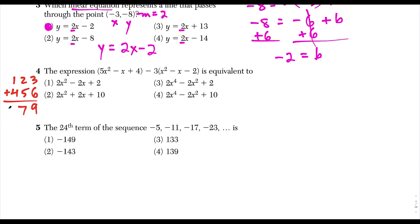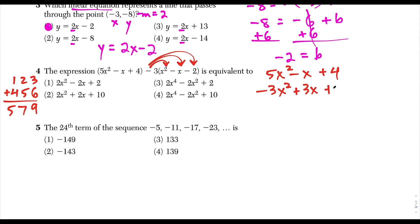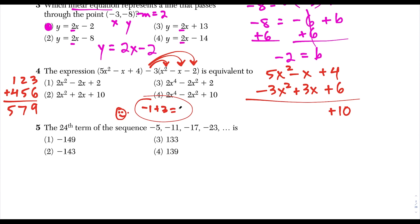Distributing negative 3: negative 3 times x squared is minus 3x squared, negative 3 times negative x is plus 3x, and negative 3 times negative 2 is positive 6. Now combine like terms: 4 plus 6 is 10, negative x plus 3x means negative 1 plus 3 equals 2, so plus 2x. And 5x squared minus 3x squared gives 2x squared. So the answer is 2x squared plus 2x plus 10, which is choice 2.